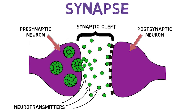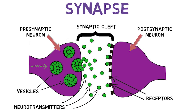Neurotransmitters are typically stored in the presynaptic neuron in small sacs called vesicles, and are released into the synaptic cleft when an electrical impulse called an action potential occurs in the presynaptic neuron. The neurotransmitters attach, or bind, to proteins called receptors, mostly on the postsynaptic neuron.